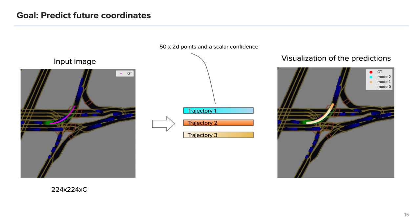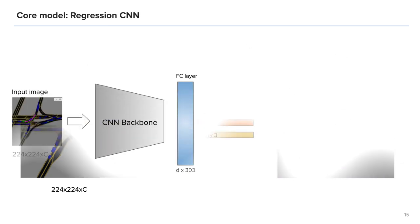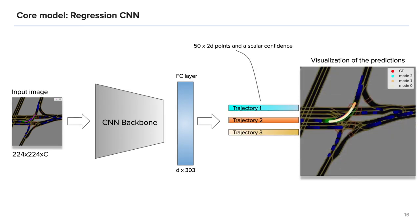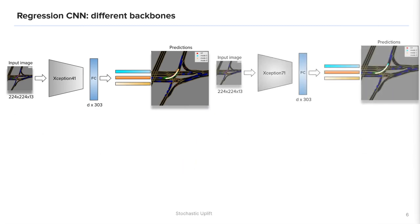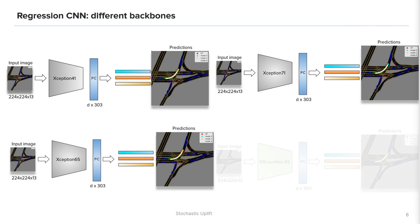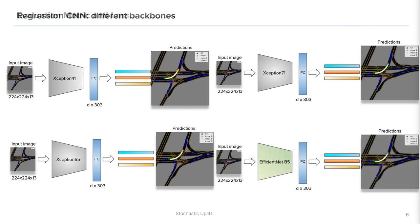What you always should do in any Kaggle competition is to start with a simple baseline model and it turned out for us that the simplest baseline worked the best and it became the core of our solution. It is a simple CNN which takes an input image and predicts three trajectories with the corresponding confidence. Of course, as a common practice we experimented with different CNN backbones. Among the best performing were Xception 41, Xception 71, Xception 65, and EfficientNet B5.